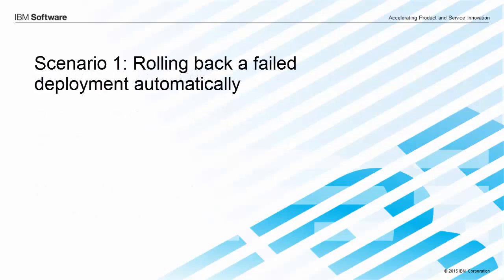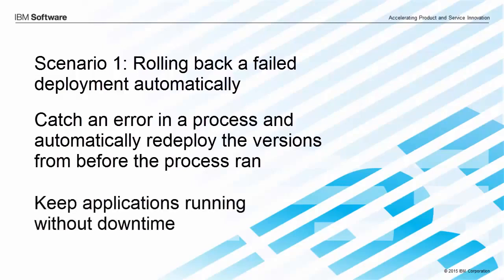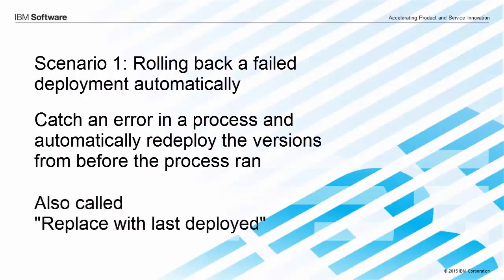So let's look at the first scenario: detecting that a component didn't deploy correctly and then automatically redeploying a previous version. If I've got an important application, I don't want it to go offline when a deployment fails. I'd rather go back to a previous version immediately so I have as little downtime as possible. That's where the 'replace with last deployed' rollback is useful. You use this type of rollback within an application process to automatically redeploy the versions that were there when the process started.